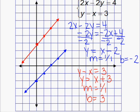Now notice that the two lines are parallel. So we would say that this system has no solution because these two lines have no points of intersection.